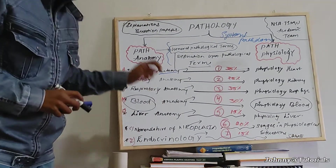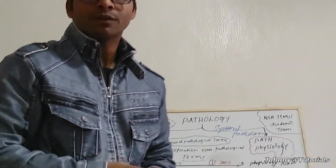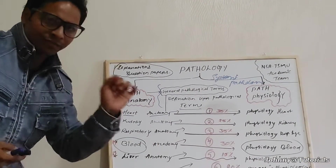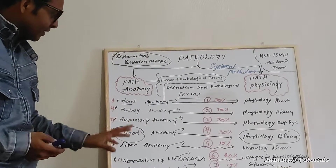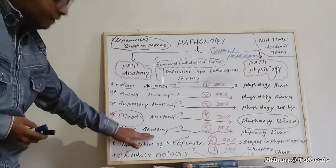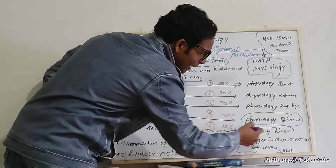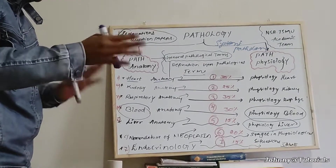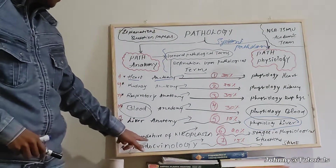Let's go with liver anatomy. Liver cirrhosis, alkalosis, and different types of liver diseases — it is better to study liver anatomy perfectly first. In path anatomy, when you understand liver anatomy perfectly, then only will you understand the physiology of the liver. Otherwise it will be like a foreign language.